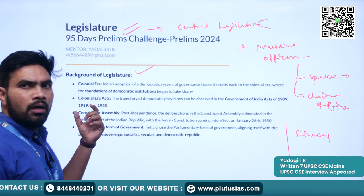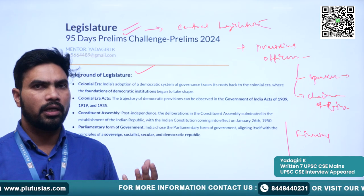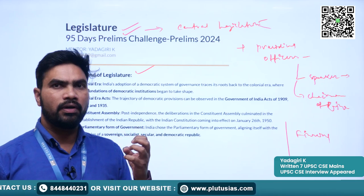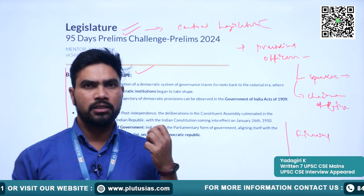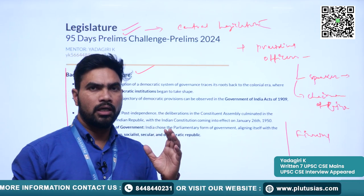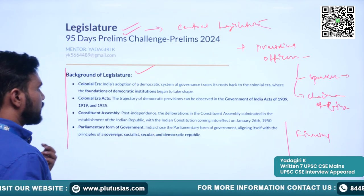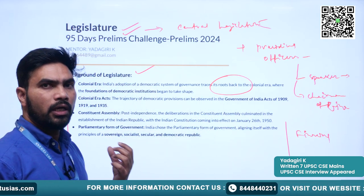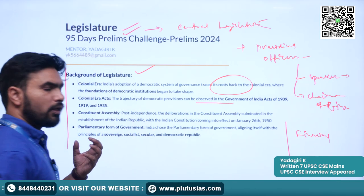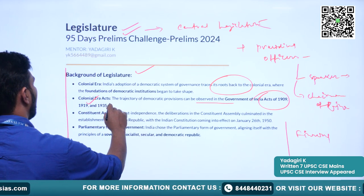We will try to understand the background of the Legislature and how it has evolved over time. Earlier we studied pre-constitutional developments during the British era. There were Legislative Councils first at the central level, then introduced at the provincial level. Those Legislative Councils are the source of the present-day Legislature — that is, the Parliament of India. The roots can be traced to the Colonial era. A democratic foundation was laid through the Government of India Acts of 1909, 1919, and 1935.